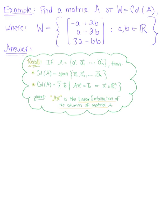Find a matrix A such that W is equal to the column space of matrix A, where W is defined as the set of the equations minus A plus 2B, A minus 2B, 3A minus 6B, such that A and B are real numbers.